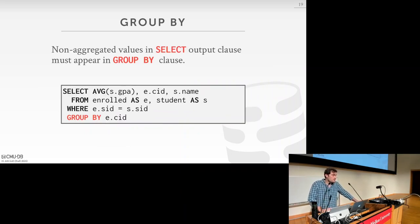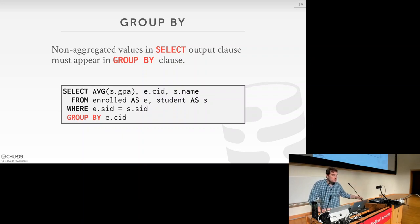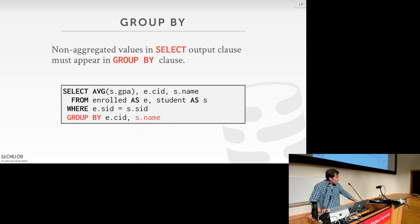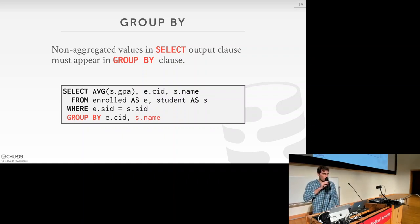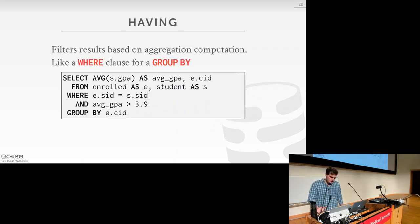The rule to remember is that non-aggregated values in the SELECT clause must always appear in the GROUP BY clause. So if you have a column like e.cid appearing in SELECT, it must also appear in GROUP BY. Similarly, if you include s.name in the SELECT clause, it must also appear in GROUP BY.